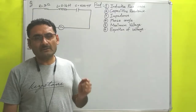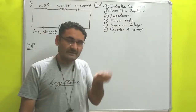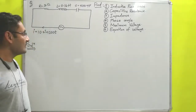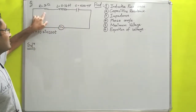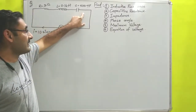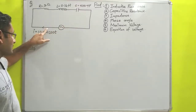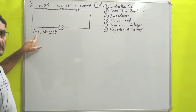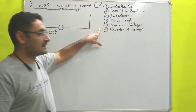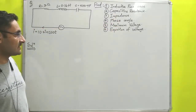In the previous video we already discussed the series RLC circuit — what type of equations are there and the different cases. We will apply those equations here to solve this numerical on the board. In the numerical, a circuit diagram is given with a 3 ohm resistor, 0.16 henry inductor, and 500 microfarad capacitor connected in series with an alternating source. Current flows clockwise with the equation i = 10 sin(100t). We have to calculate six quantities: inductive reactance, capacitive reactance, impedance, phase angle, maximum voltage, and equation of voltage.